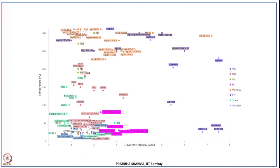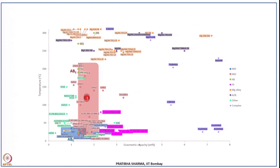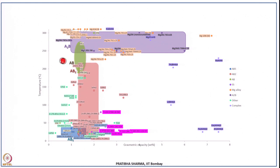In the solid state hydrogen storage field we have seen a wide variety of materials. If we plot storage capacity against desorption temperature at an equilibrium pressure of 1 bar: AB5 type materials have lower gravimetric capacity but also lower desorption temperature; AB2 type materials have a wide window of high desorption temperatures and relatively lower gravimetric capacity; AB type materials have a certain desorption temperature range but lower gravimetric capacity of less than 2 weight percent; and A2B type compounds have higher desorption temperatures but a wide range of gravimetric storage capacity.